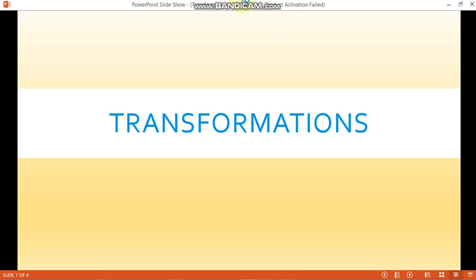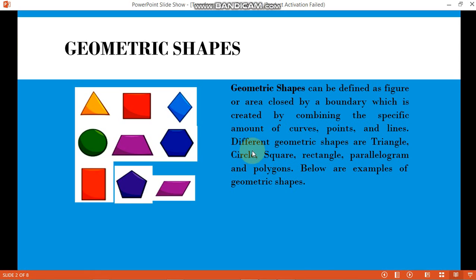Hello, good morning. For this video, this is the second lesson for geometric designs. This is transformations. Geometric shapes can be defined as a figure or area closed by a boundary which is created by combining a specific amount of curves, points, and lines. We have different geometric designs such as triangle, circle, square, rectangle, parallelogram, and other polygons.